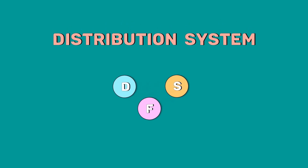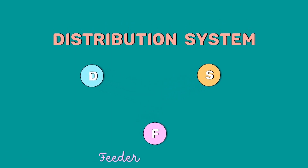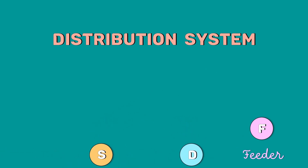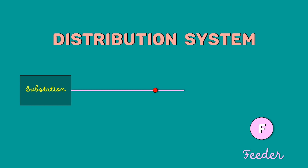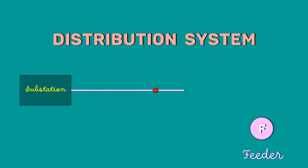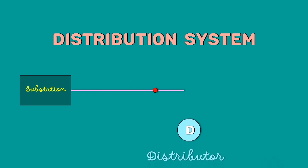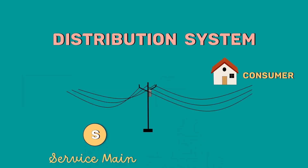The distribution system mainly consists of feeders, distributors, and the servicemen. A feeder is a conductor which connects the substation to the area where the power is to be distributed. Generally, no tappings are taken from the feeder so that the current in it remains the same throughout. A distributor is a conductor from which tappings are taken for supply to consumers. A servicemen is a small cable that connects the distributor to the consumer's terminal.